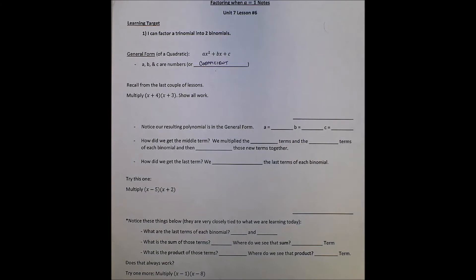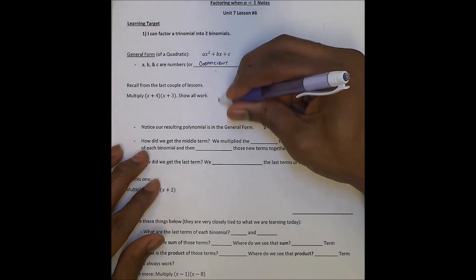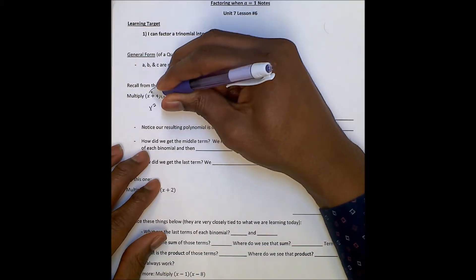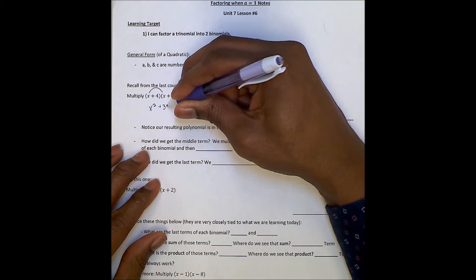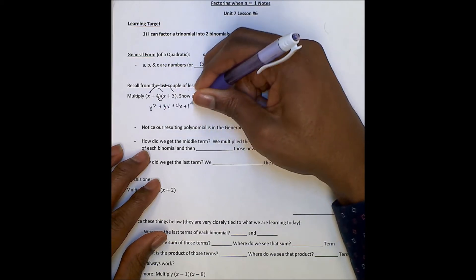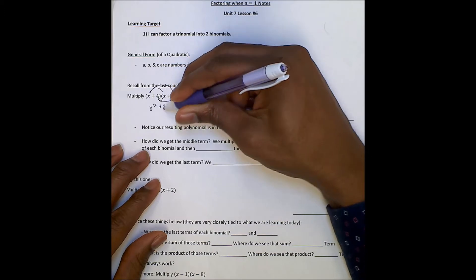Alright, so let's multiply X plus 4 times X plus 3 to show where we're getting to. There are a couple different ways you can do this — the FOIL method or the box method. I'll just FOIL. So I have X squared plus 3X plus 4X plus 12. Combining like terms, 3 and 4 gives us 7, so my final answer is X squared plus 7X plus 12.